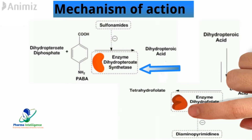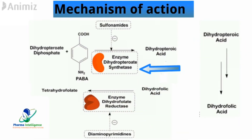PABA is incorporated into the developing tetrahydrofolic acid molecule by enzyme-catalyzed condensation with 6-hydroxymethyl-7,8-dihydropterin pyrophosphate to form 7,8-dihydropteroate and pyrophosphate. Thus, sulfonamides may also be classified as anti-metabolites.